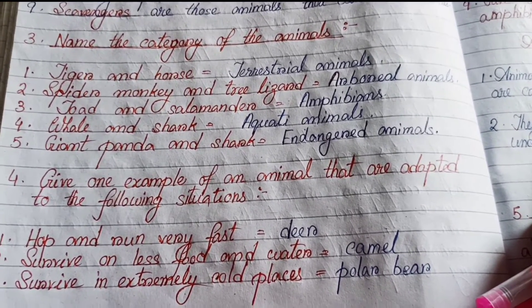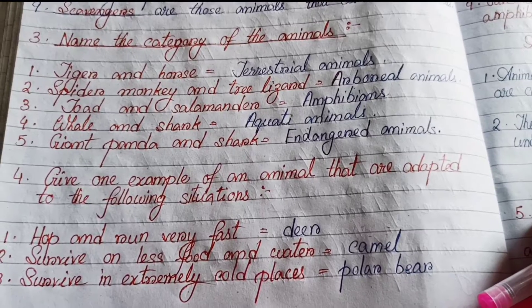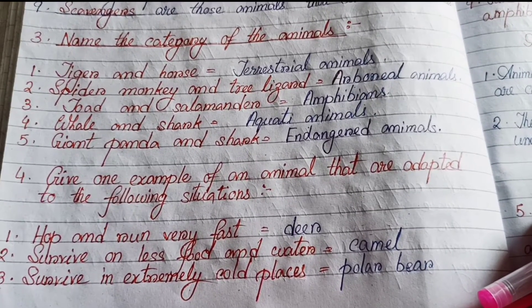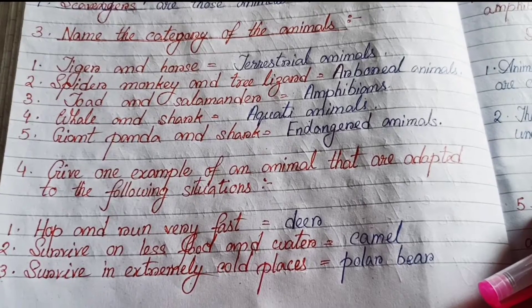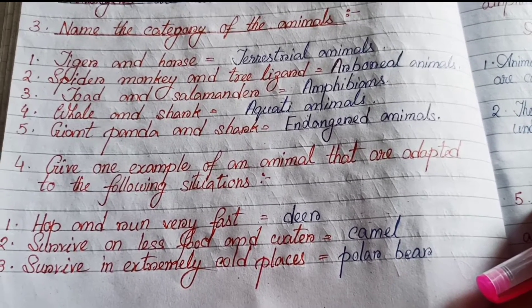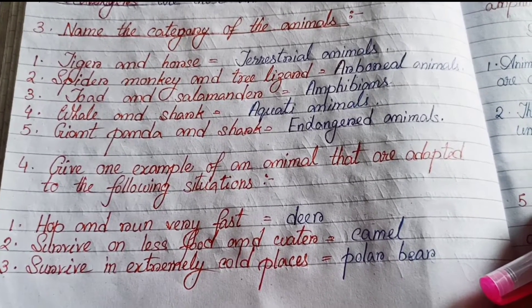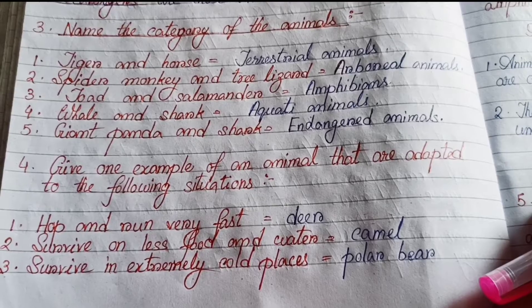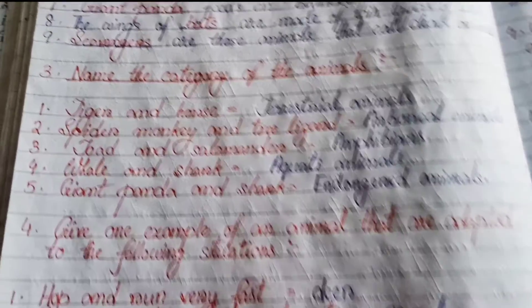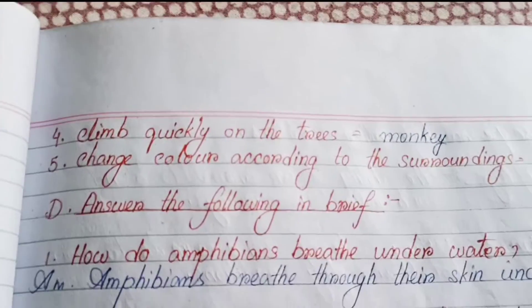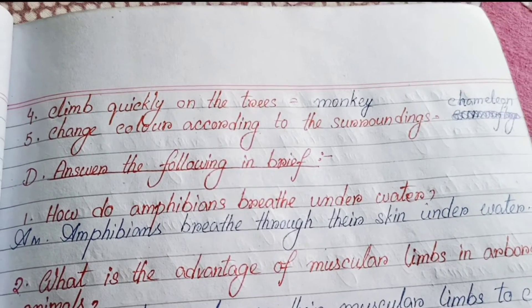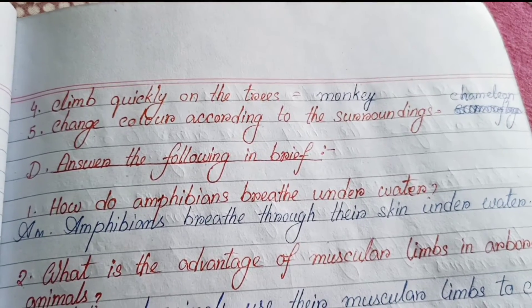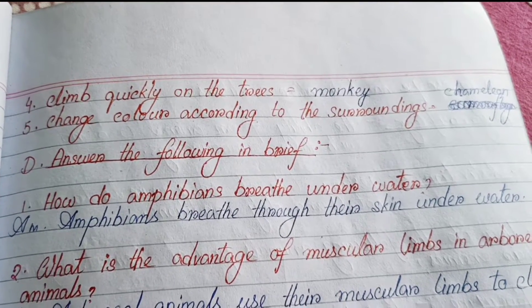Number five — Giant panda and snow leopard: endangered animals. Number four: Give one example of an animal adapted to the following situations. Number one — Hop and run very fast: deer. Number two — Survive on less food and water: camel. Number three — Survive in extreme cold places: polar bear. Number four — Climb quickly on trees: monkey. Number five — Change color according to surroundings: chameleon.